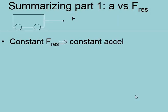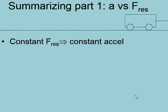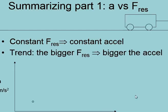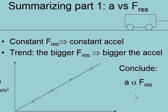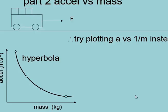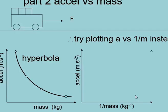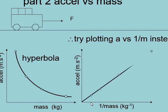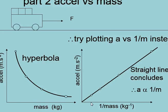Summarizing Part 1: we saw that a constant force results in a constant acceleration. In successive runs we increased the resultant force, and the trend is the bigger the force the bigger the acceleration — each time we get bigger acceleration values, allowing us to conclude the direct proportionality relationship. The mass however is an inverse relationship. The hyperbola means we must try plotting acceleration versus the inverse of mass. The smallest mass becomes the largest value on the inverse mass scale, and they line up beautifully in a straight line, concluding the inverse relationship.